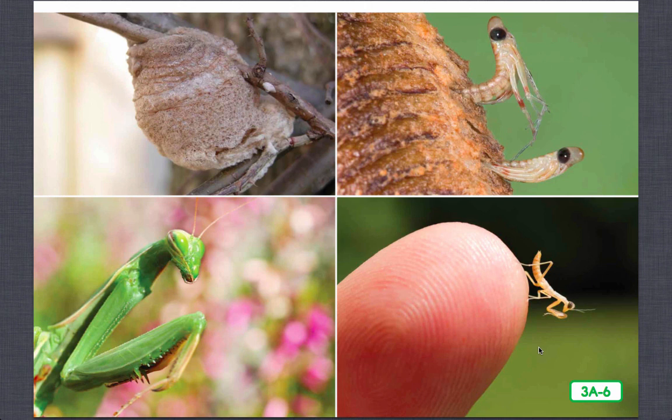A praying mantis goes through three life stages: egg, nymph, and adult. In the autumn, the female mantis lays as many as 400 eggs inside an egg case attached to a plant. In spring, the eggs hatch and the tiny praying mantis babies emerge from the egg case. These brand new hatchlings, or nymphs, don't quite look like me. A little later, the nymph resembles me more — the only thing it is missing is its wings.